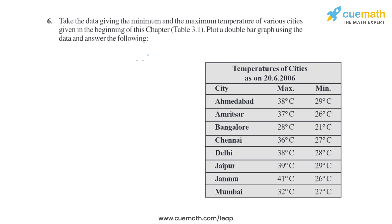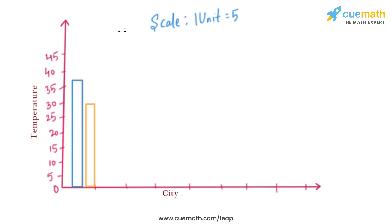Looking at the temperature data, the minimum value is 21 degrees Celsius and the maximum value is 41 degrees Celsius. We will take the scale as 1 unit equals 5 degrees Celsius and mark the temperatures on the y-axis: 0, 5, 10, 15, 20, 25, 30, 35, 40, and 45.